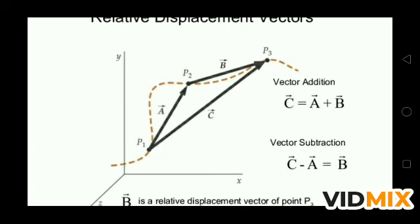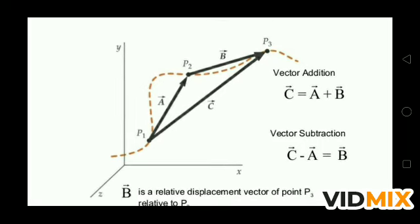Now, regarding relative displacement: suppose we have a coordinate system x, y, z. A point P1 has coordinates on the x-axis and point P2 shifts to point P3 after some time. If vector B is added tip to tail to vector A, we get resultant vector C. So C equals A plus B, or equivalently, C minus A equals B. This is the addition and subtraction of vectors.